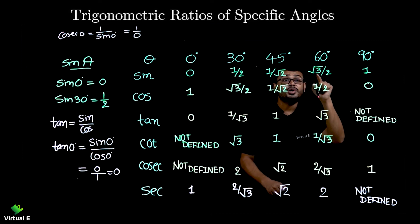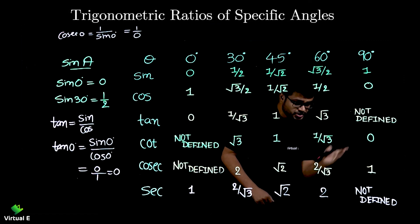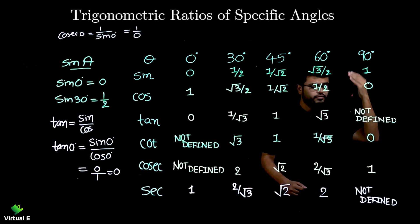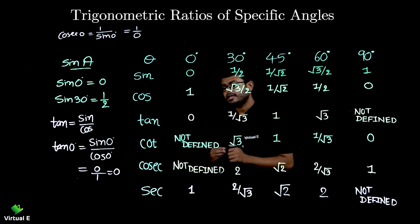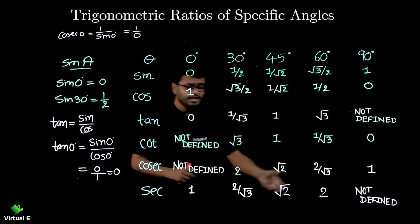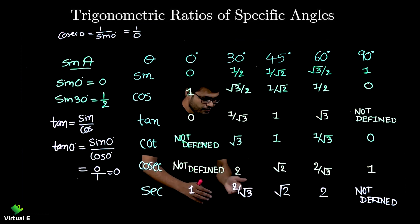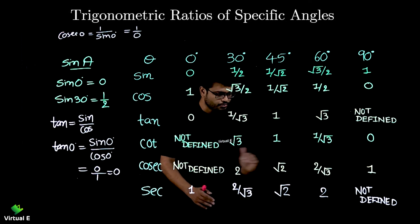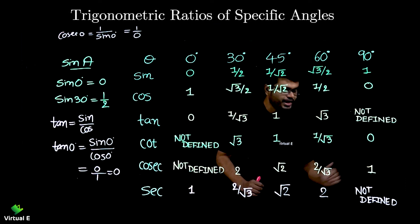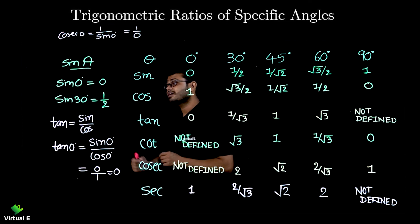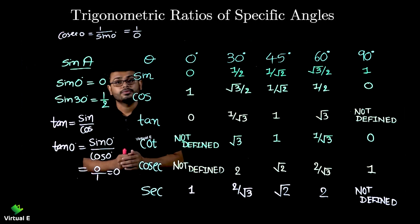Reciprocal of root 3 by 2 which is 2 by root 3, and reciprocal of 1 as it is. Again you can write in the reverse way: 1 will come over here, then 2 by root 3, root 2 as it is, 2 here, and not defined. So these are the specific values that we are going to use to calculate the sums related to trigonometric ratio.